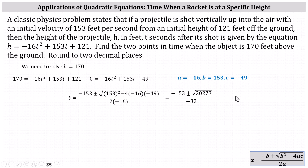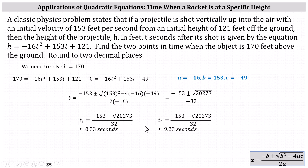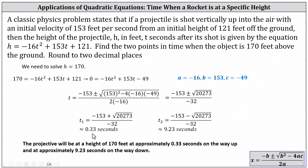So, one solution t sub 1 is equal to negative 153 plus the square root of 20,273, all divided by negative 32, which comes out to approximately 0.33 seconds. And the second time, t sub 2 equals negative 153 minus the square root of 20,273, all divided by negative 32, which gives us approximately 9.23 seconds. This indicates the projectile will be at a height of 170 feet at approximately 0.33 seconds on the way up, and at approximately 9.23 seconds on the way down.